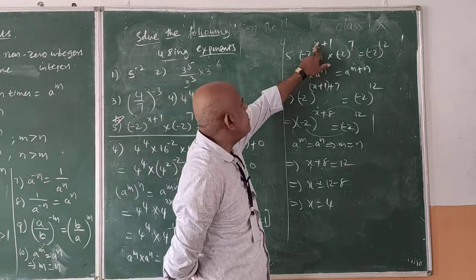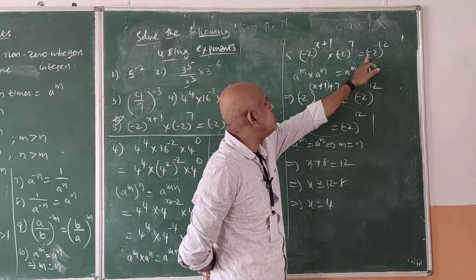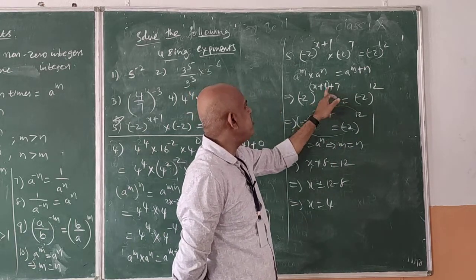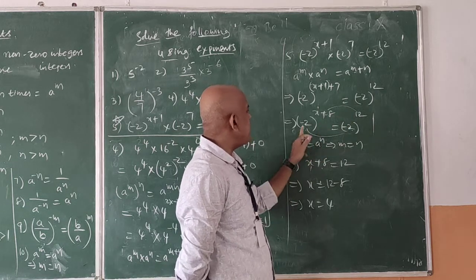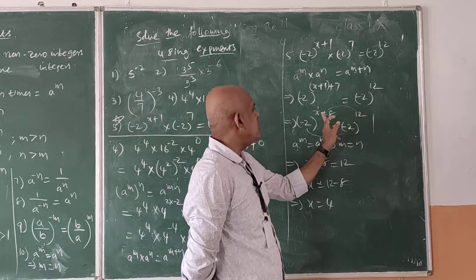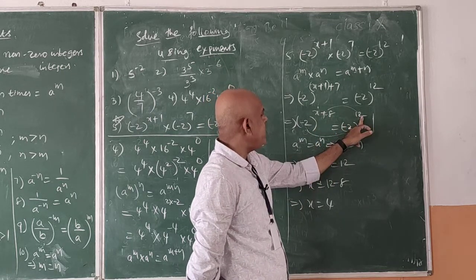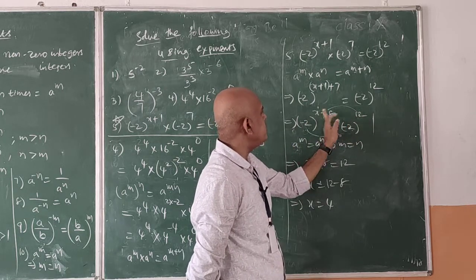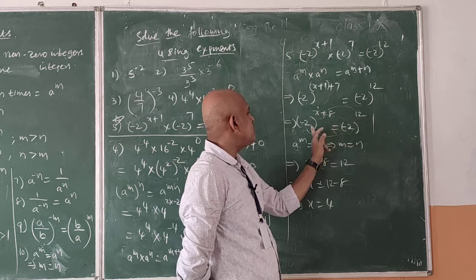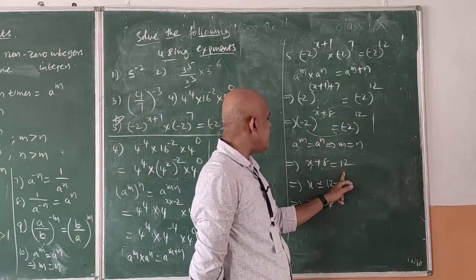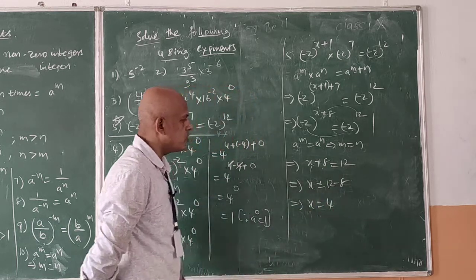To repeat: it is in the form of a^m × a^n, so powers are added: x plus 1 plus 7 equals x plus 8. Since bases are equal, powers are equated — x plus 8 equals 12. Transposing plus 8 to the right hand side, it becomes minus 8, so x equals 12 minus 8, which equals 4. These are the 5 problems.